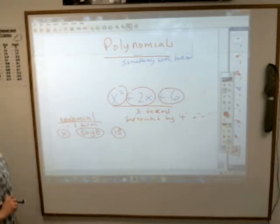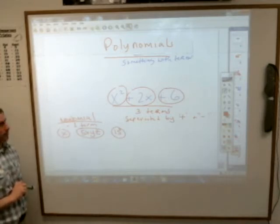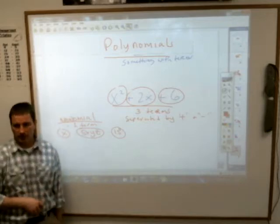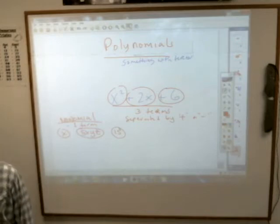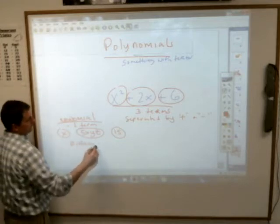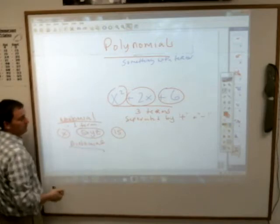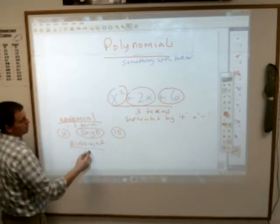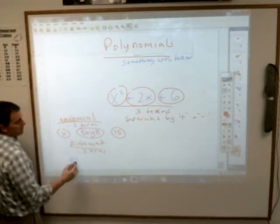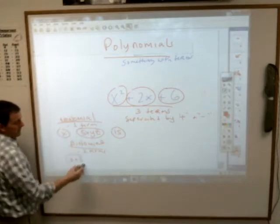When it says separated by pluses and minuses, why not division and multiplication? Because division and multiplication come together and can be one thing. It's just addition and subtraction that separate terms. In addition to that, we have what's called a binomial — bi means two, so two terms is a binomial.